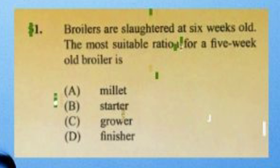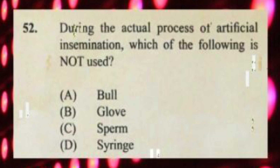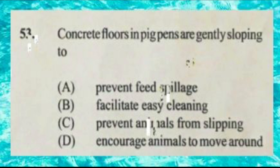Question number fifty-two: during the actual process of artificial insemination, which of the following is not used? A) bull, B) glove, C) sperm, D) syringe. The answer is A, bull. Question number fifty-three: concrete floors in pig pens are gently sloping to A) prevent feed spillage, B) facilitate easy cleaning, C) prevent animals from slipping, D) encourage animals to move around. The answer is B, facilitate easy cleaning.